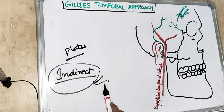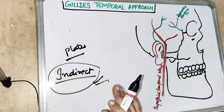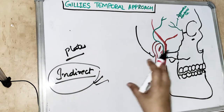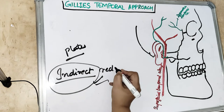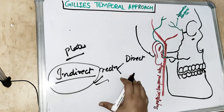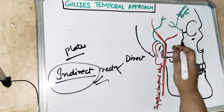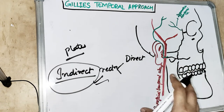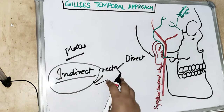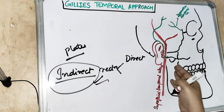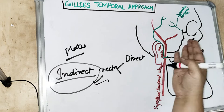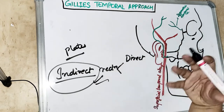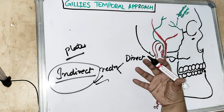For indirect reduction, we have two approaches. One is the direct approach, where we give a coronal incision, reflect the flap, and reach the zygomatic arch directly. However, a coronal incision mostly results in scar alopecia — hair loss due to scarring — and can also cause temporal hollowing. So the adverse effects and complications are far worse than the fracture itself, which is why surgeons mostly prefer the indirect approach.